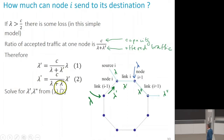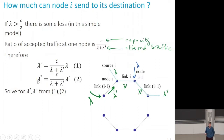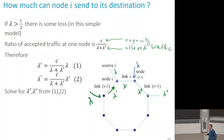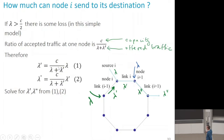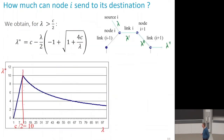So we have two equations. The unknowns are lambda prime and lambda second. Lambda is given — that's the input variable. C is a constant parameter of the system. So we have to solve for those two equations. Two equations, two unknowns — should be doable. It's a quadratic equation at the end, which we can solve exactly.